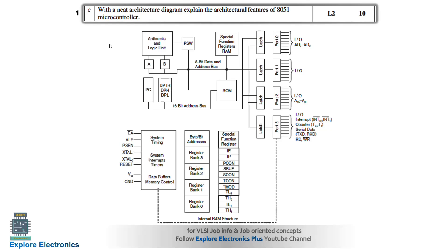Coming to the next question, 1C — this is a very important question, also repeatedly asked. Every time you see a microcontroller question paper, you will see this question: 'With a neat architecture diagram, explain the architectural features of the 8051 microcontroller.' For 10 marks, you need to draw the architectural diagram and also write the explanation. The explanation carries more than 5 marks and the diagram the other 5 marks.